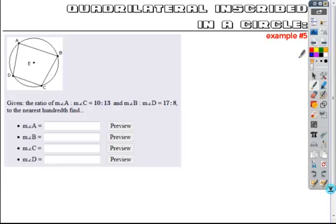One way you could solve this is if you know that these opposite angles are going to be supplementary. You could say that 10 times some multiplier for A and 13 times that same multiplier for angle C has to add up to 180 degrees. So that's one way.